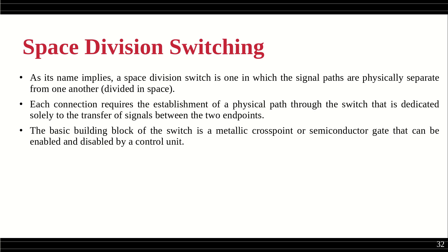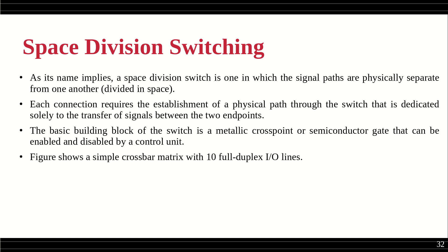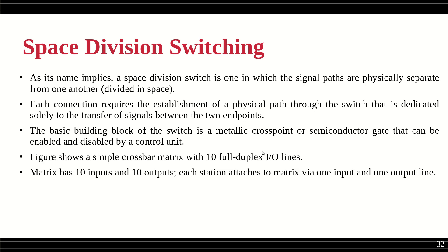The basic building block of this switch is a metallic cross point or a semiconductor gate that can be enabled and disabled by a control unit. When you want communication, you open the switch to connect; once the connection teardown occurs, it is closed. The figure shows a crossbar matrix with 10 full-duplex input-output lines — both send and receive — and each station attaches via one input and one output line.